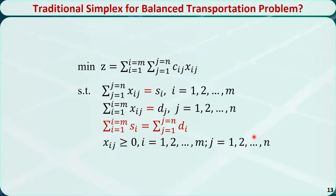Why is the regular simplex method not very efficient in solving the balanced transportation problem? This is because it contains many equality constraints. The traditional simplex algorithm would have to use the Big M method to find the initial basic feasible solution by introducing many artificial variables, which increases the complexity of the problem. In comparison, the transportation simplex method does not need to introduce extra variables and can deal with the equality constraints directly.